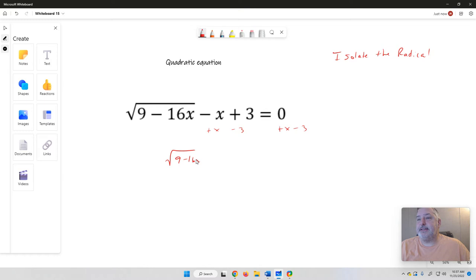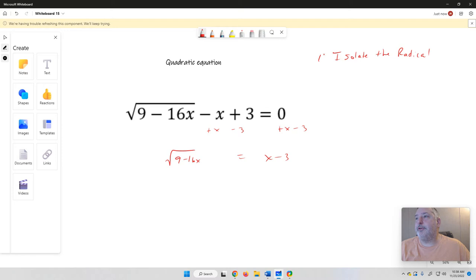So once we get there, first, second, we're going to square both sides. So I'm going to square each side to kind of get rid of the radical. We can't really solve this with the radical. So we're going to square. And so that gives us 9 minus 16x equals...